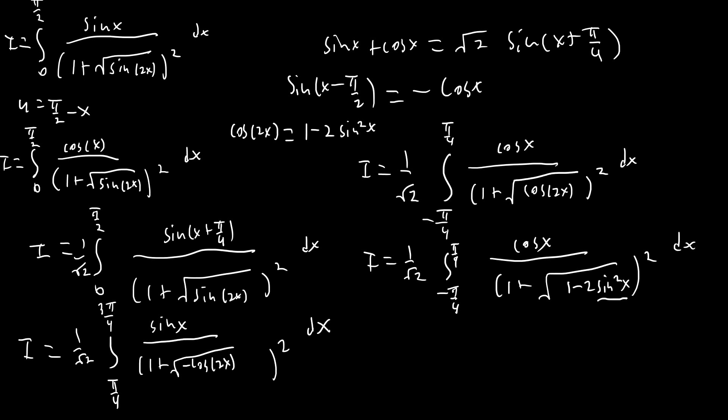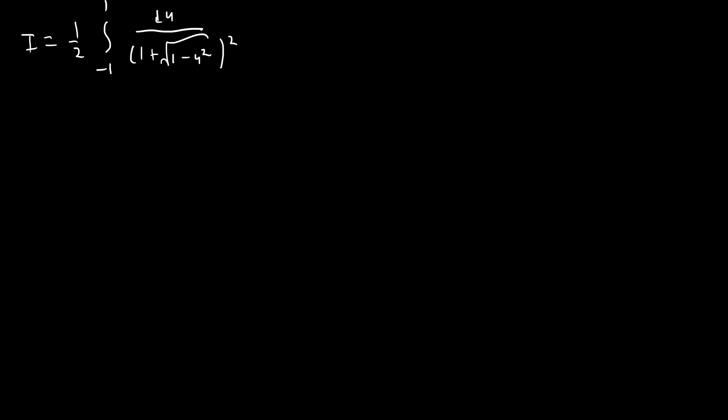We want to substitute u equals square root 2 times sine of x, because we have this nice cosine x on top. I'm going to place a square root 2 inside so this becomes one half. Once we substitute u equals square root 2 sine of x, the differential on top disappears and we get du all over 1 plus square root of (1 minus u squared), squared. We have u squared because of the 2 sine squared of x term.